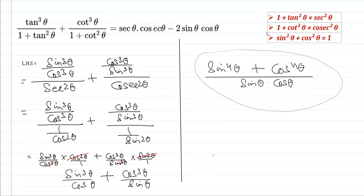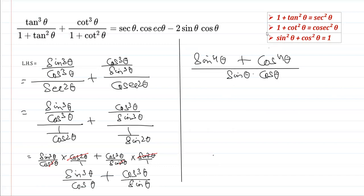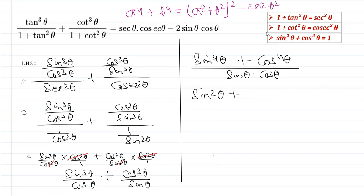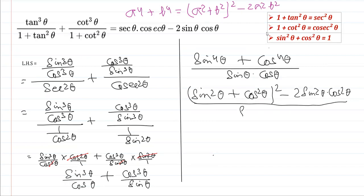Now we apply the identity a⁴ + b⁴ = (a² + b²)² - 2a²b². You can either derive it in the exam or learn it. Applying this identity, sin⁴θ + cos⁴θ becomes (sin²θ + cos²θ)² - 2sin²θ·cos²θ, all divided by sinθ·cosθ.